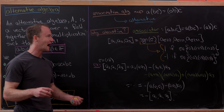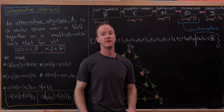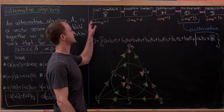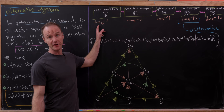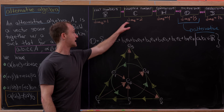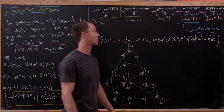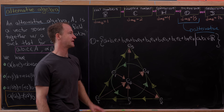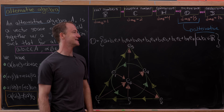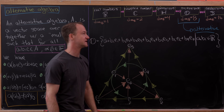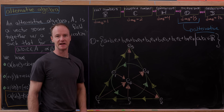Now let's look at the promised famous example of an alternative algebra. To set the stage, consider this chain of constructions of algebras over R. The real numbers are a one-dimensional algebra, commutative and associative. The complex numbers are two-dimensional and still commutative and associative. The quaternions are four-dimensional, no longer commutative but still associative. The octonions are eight-dimensional, no longer associative but still alternative. And the sedenions are 16-dimensional, no longer alternative but satisfying the flexible identity.